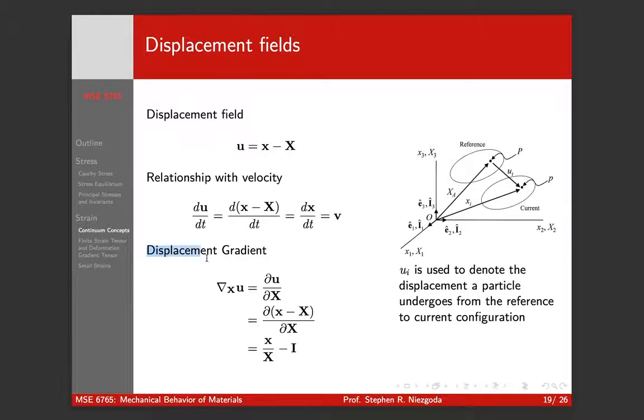And we're going to use this notion of a displacement gradient quite a lot. This is the derivative of our displacement with respect to position in our initial body. So it's how does the displacement change with position? This particle move this way, and this particle move this way, but not as much. So there's a gradient in displacements through the sample.